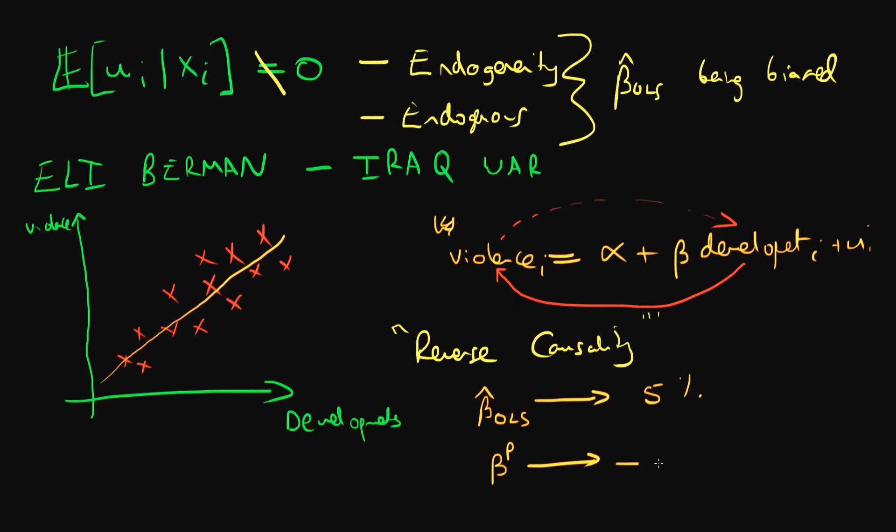So because of this issue of reverse causality, we have actually got our OLS estimators producing upwardly biased estimates of the population parameter beta.